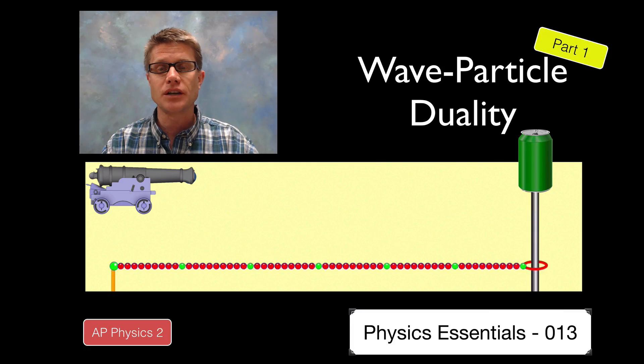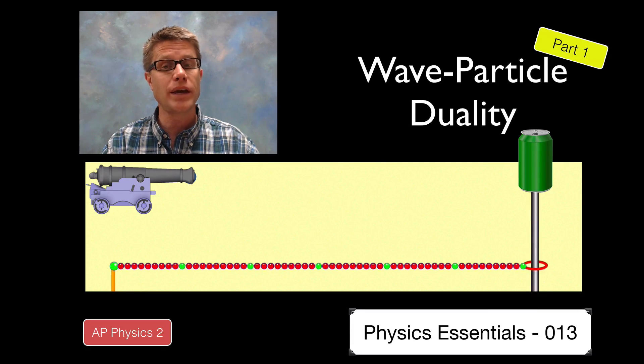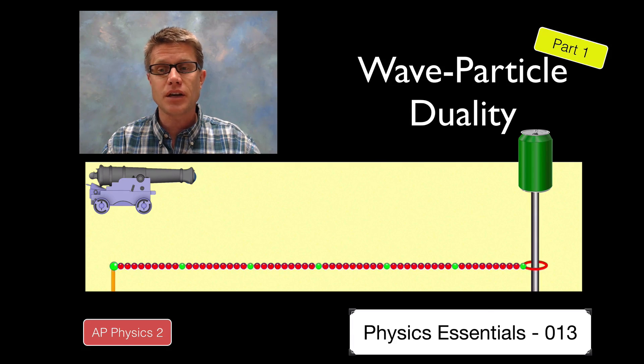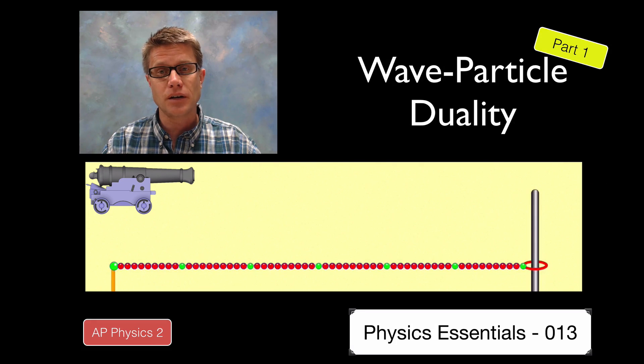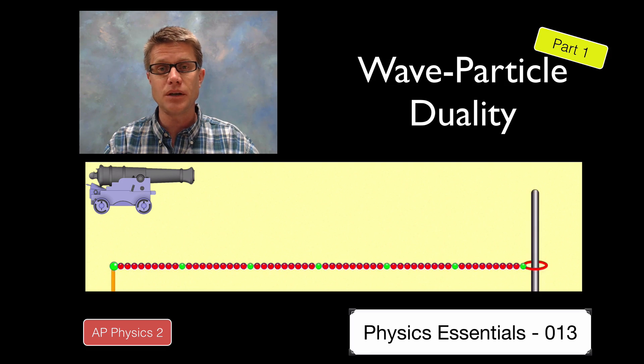Before we talk about that we should identify what a particle is and what a wave is. They're both ways that we can transfer energy from one point to another. And so they both would allow me to knock this can over. Let me use a cannonball first. And so that's a particle. I'm transferring energy through a particle from point A to point B. The cannonball is going from one point to another. And I've knocked the can off.